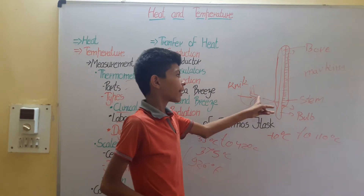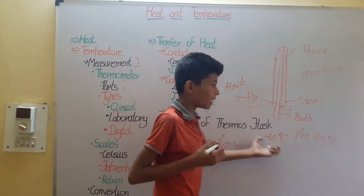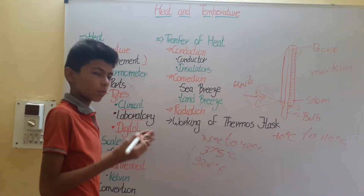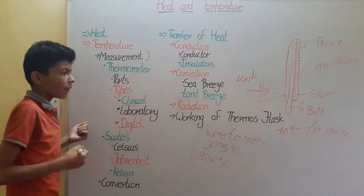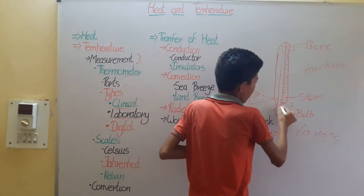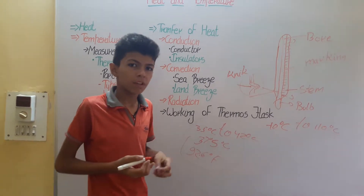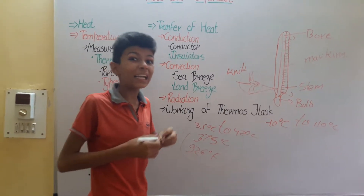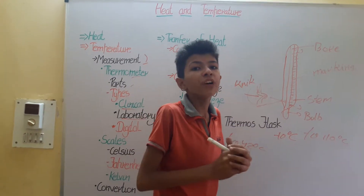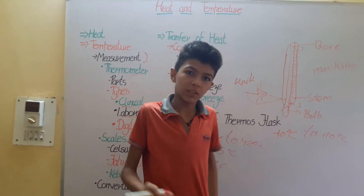In the laboratory thermometer, the constriction is absent. The temperature must be read while the thermometer is still inside the substance — we do not take out the laboratory thermometer to read it. Both types contain mercury or alcohol.